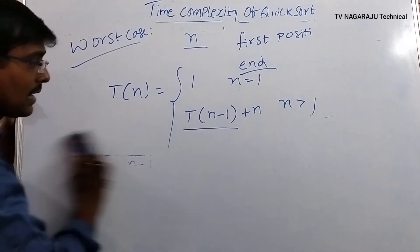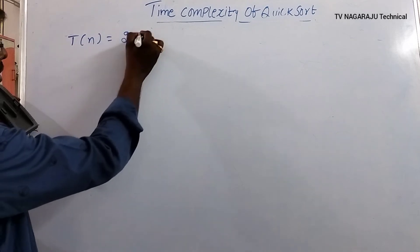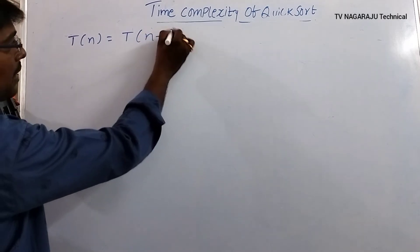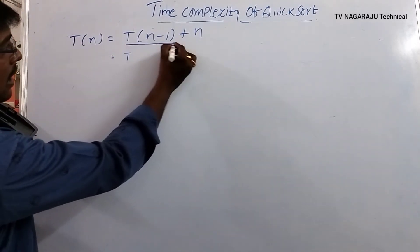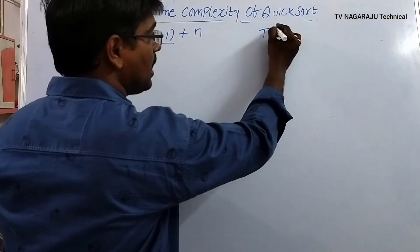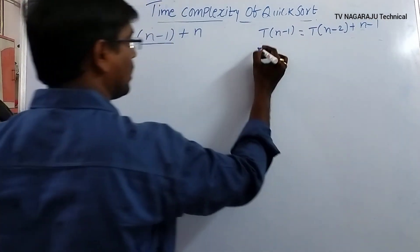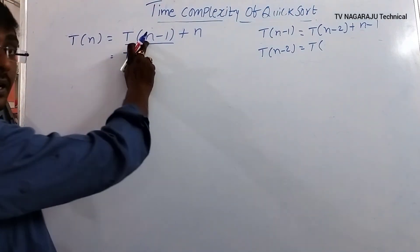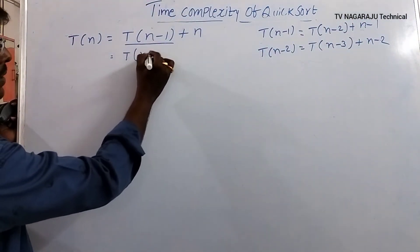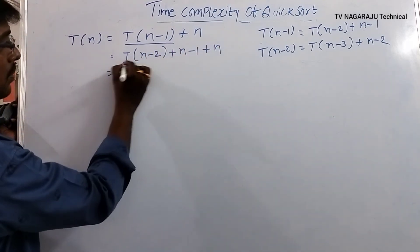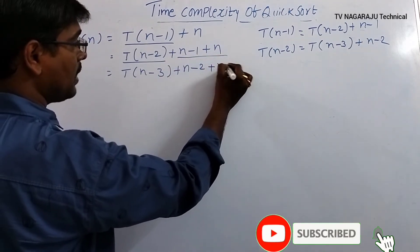Now we analyze the worst case recurrence relation. T(n) = T(n−1) + n. Substituting: T(n−1) = T(n−2) + (n−1), and T(n−2) = T(n−3) + (n−2). Replacing T(n−1): T(n) = T(n−2) + (n−1) + n.